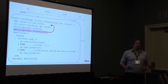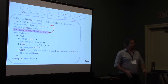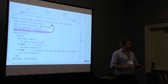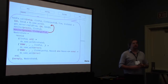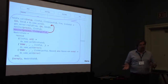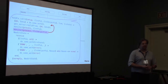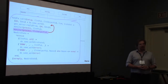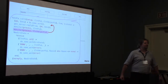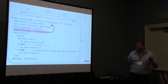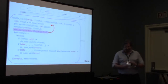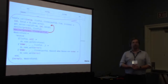Luckily, nowadays we have a tool that would catch these kinds of race conditions. It's called ConcuerError. Except it doesn't support distribution. So if the server is on a different node, it doesn't do that.